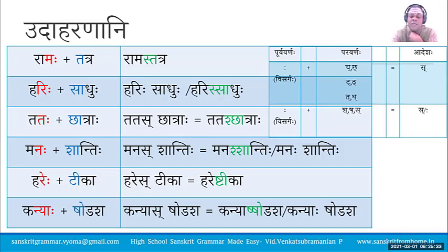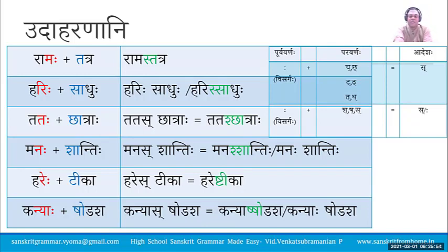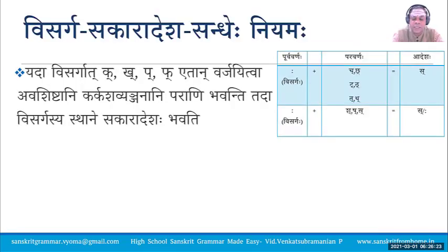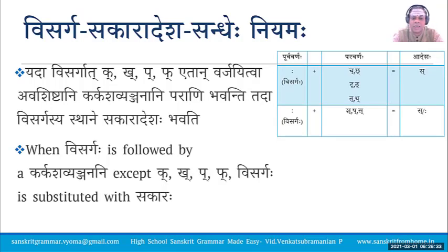For Kanyas Shodasha: Visarga gets replaced by Sakara giving Kanyas Shodasha; Sakara in front of Sakara remains Sakara, so the final form is Kanyas Shodasha. Alternatively, Visarga can become Visarga itself, giving Kanyaha Shodasha — both are valid options. The Niyama (rule) is: Yadā Visargāt — Kukha-Pupha-varjam — avasishthāni Karkashavyanjanāni parāni bhavanti tadā Visargasya sthāne Sakaradesha bhavati — when Visarga is followed by Karkashavyanjana except Kukha and Pupha, Visarga is substituted with Sakara.